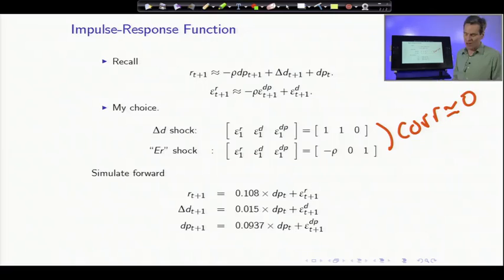It's nice to have uncorrelated shocks. You don't have to have uncorrelated shocks to plot impulse response functions, but it's kind of nice to think of these as two underlying shocks uncorrelated with each other, which are driving events.